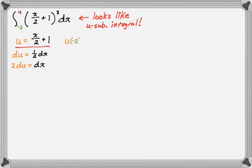So if I do u of negative two, right, u is a function of x. So if I evaluate u at negative two, I get negative one plus one, which is zero. And if I evaluate u at four, so this will be my new upper bound, when I plug in, I get four over two is two plus one is three. So my new upper bound is three, my new lower bound is zero.